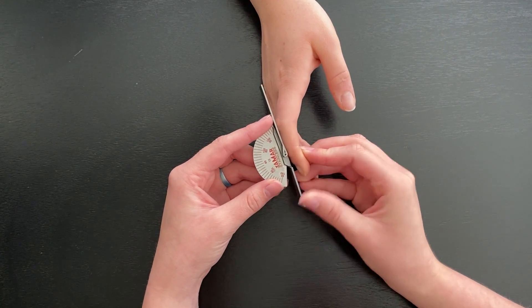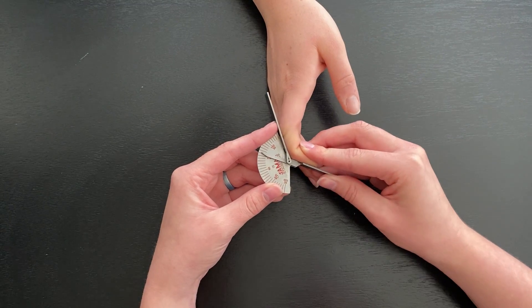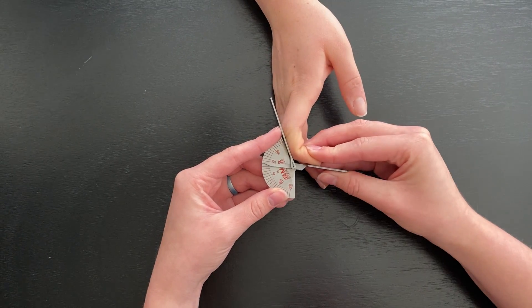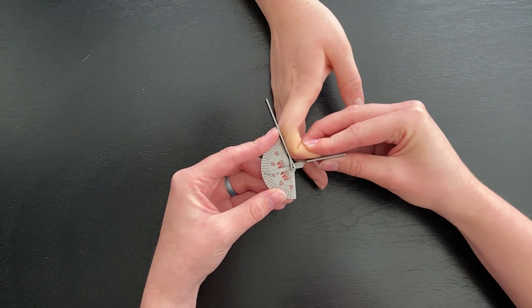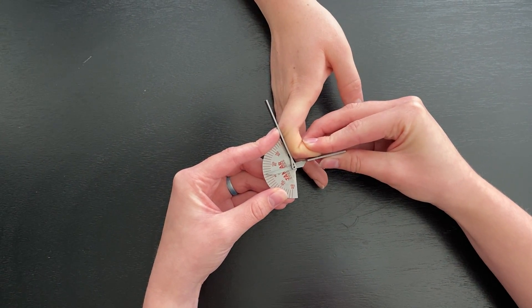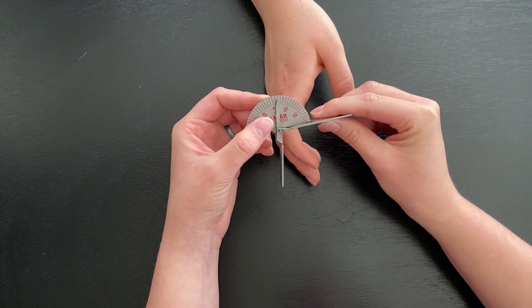So we're going to move her finger to DIP flexion and with this one you really have to be careful with their finger because sometimes that joint doesn't want to bend. Just gently put it into that end feel. Okay and she is at 80 degrees.